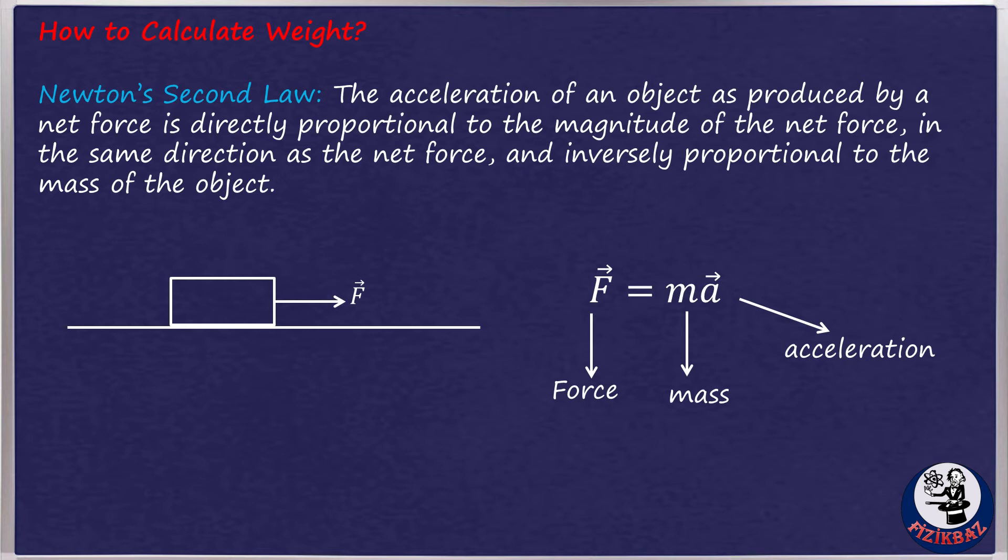Newton's second law says the acceleration of an object as produced by a net force is directly proportional to the magnitude of the net force, in the same direction as the net force, and inversely proportional to the mass of the object. In other words, the net force acting on an object is equal to the mass of that object multiplied by its acceleration.